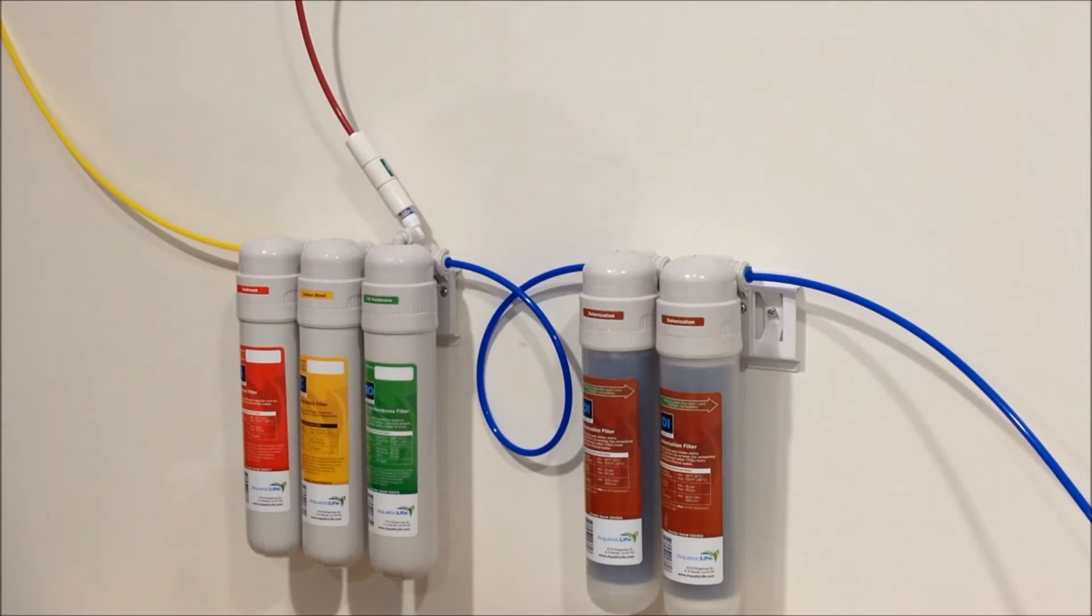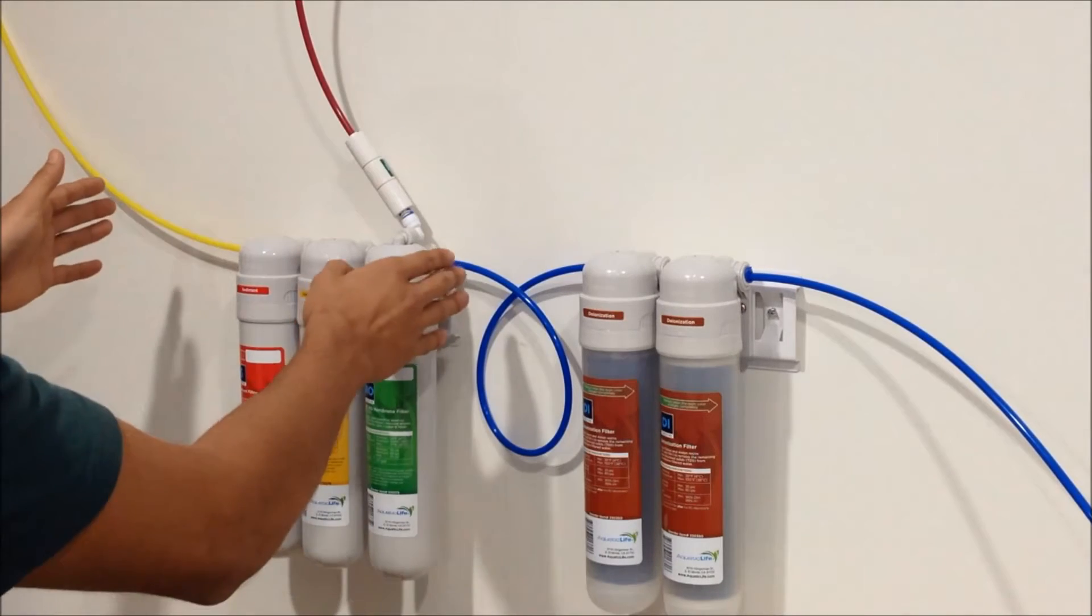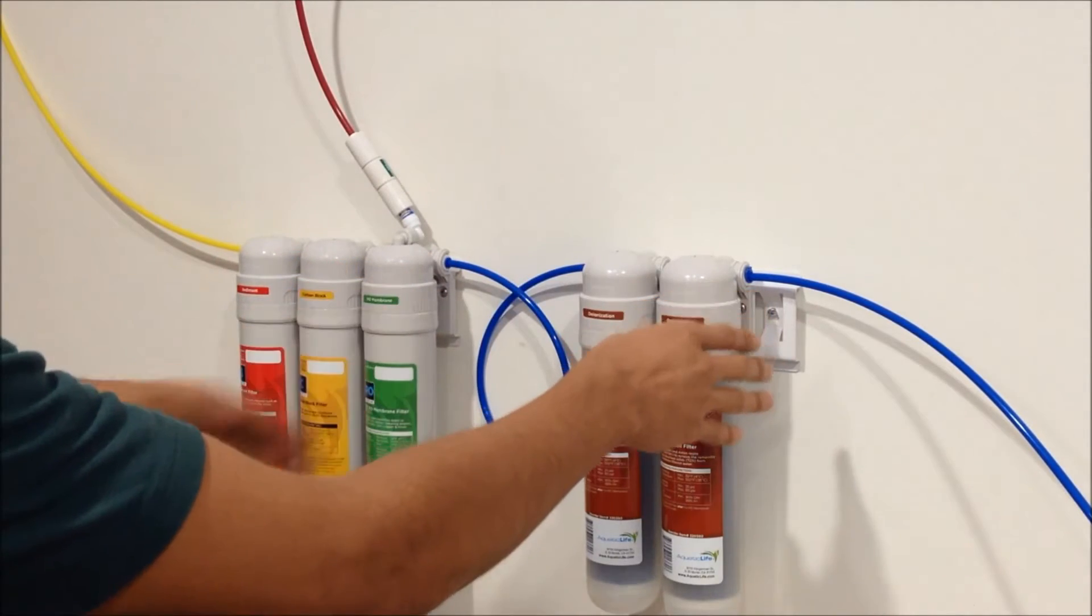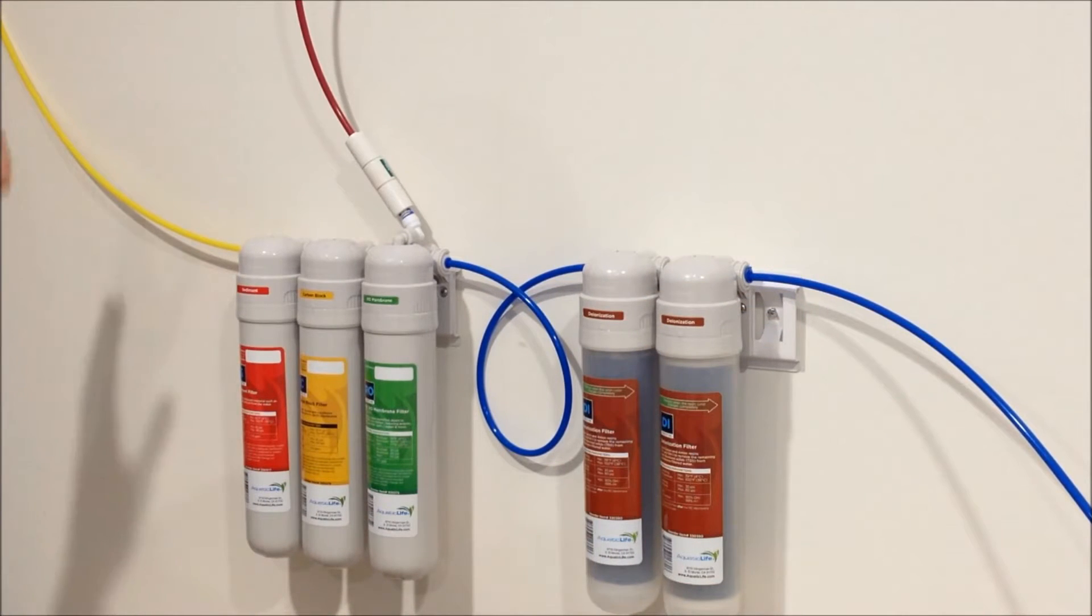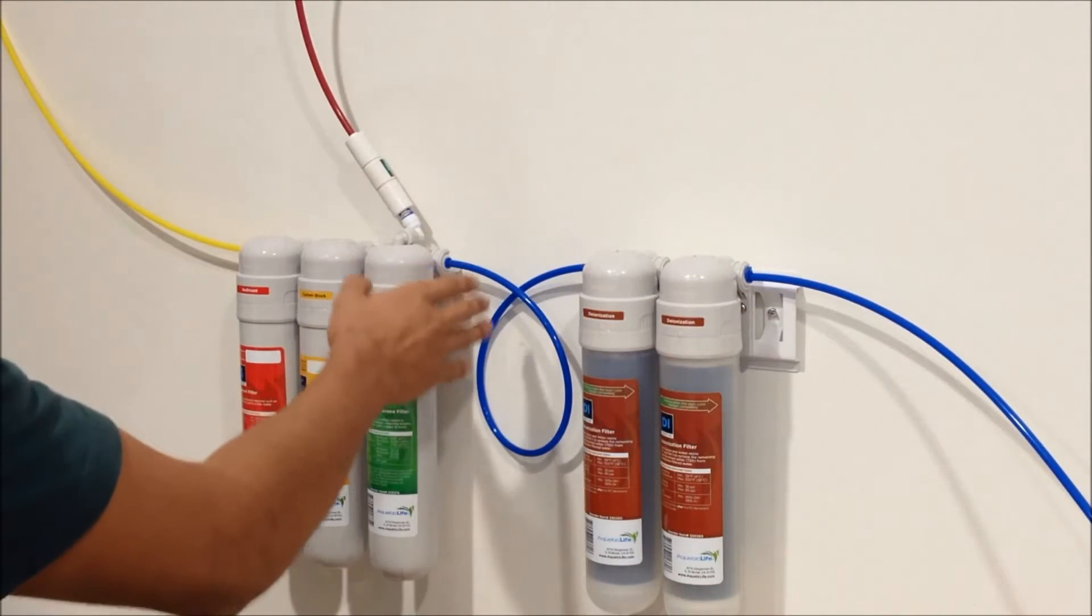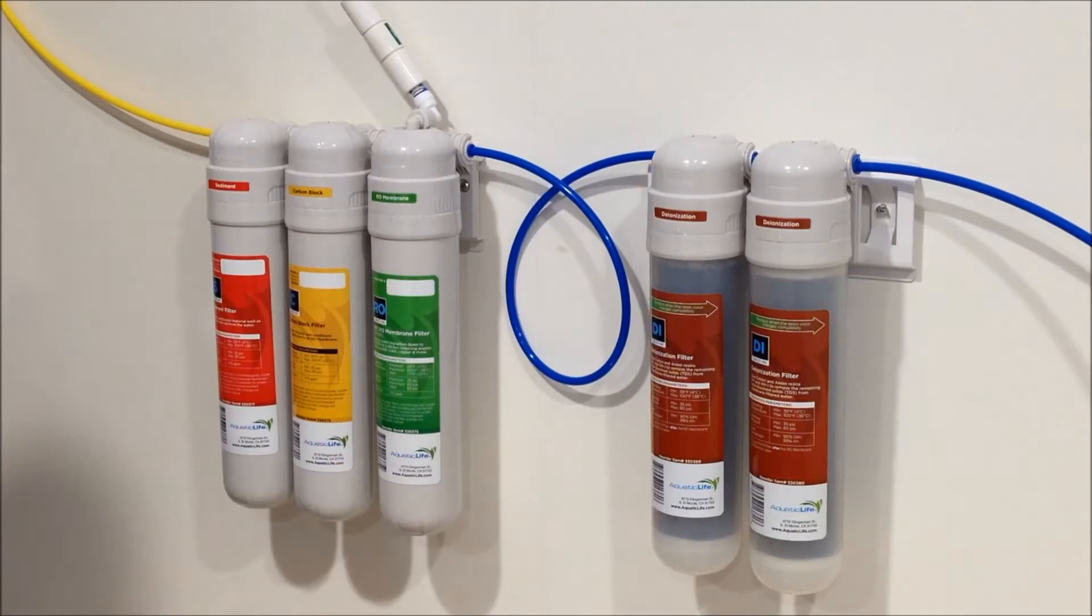So why would you want to use a dual versus a triple? The dual will allow you to read two points, either the supply and what comes out of the membrane, or what comes out of the membrane and what comes out of the DI, or what comes out of the supply and what comes out of the DI. The triple will allow you to do your supply, what comes out of the membrane, and what comes out of the DI. I'm going to go ahead and install the dual TDS meter first.